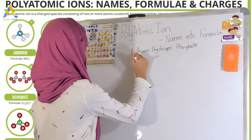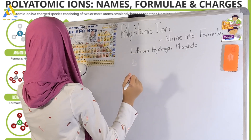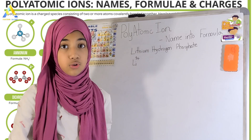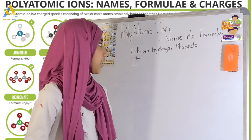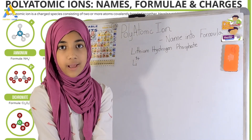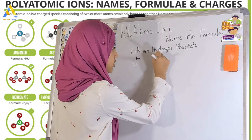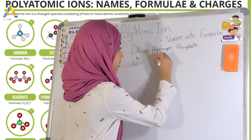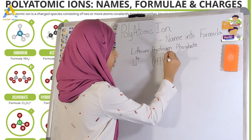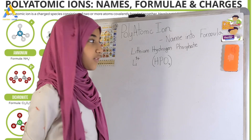Lithium is Li, and on the periodic table it has a 1-plus charge magnitude, which it wants to become. Now, Hydrogen Phosphate is actually one part — so it's basically hydrogen, and then phosphate is PO₄. And what was the magnitude? It always carries a negative 2 charge.